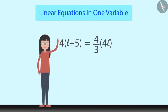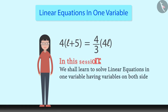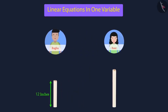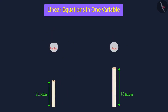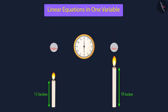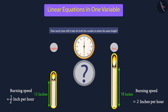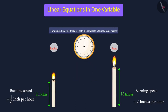In the previous session, we learned that a linear equation with one variable can also be solved when there are variables on both sides of the equation. Today let's look at another interesting example. Raghu had a 12-inch candle while Rani had an 18-inch candle. Both of them lit their candles at 6 AM. Raghu's candle decreases by half-inch every hour while Rani's candle decreases by 2 inches every hour. We have to find how much time it will take for both candles to come to the same height.